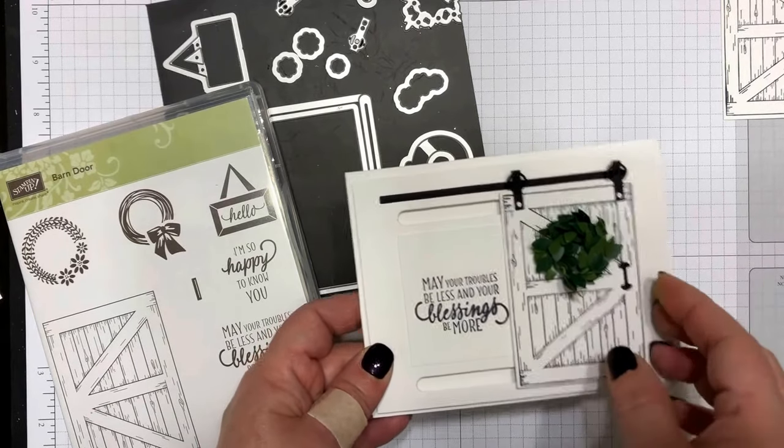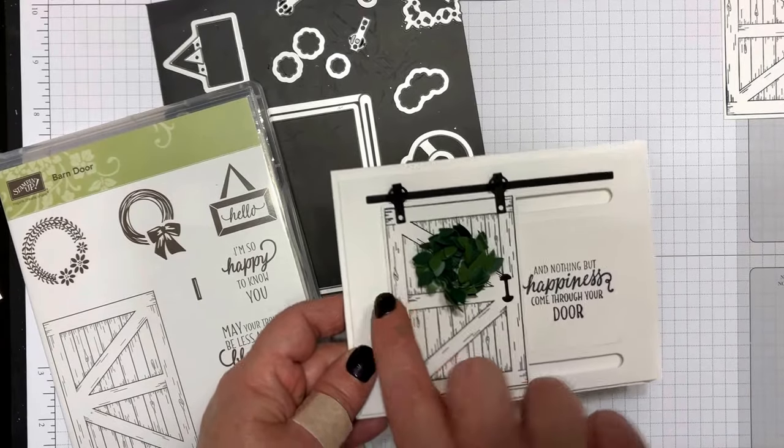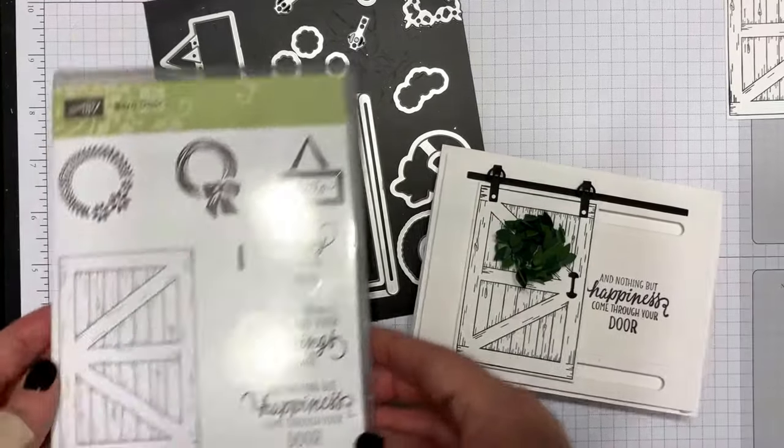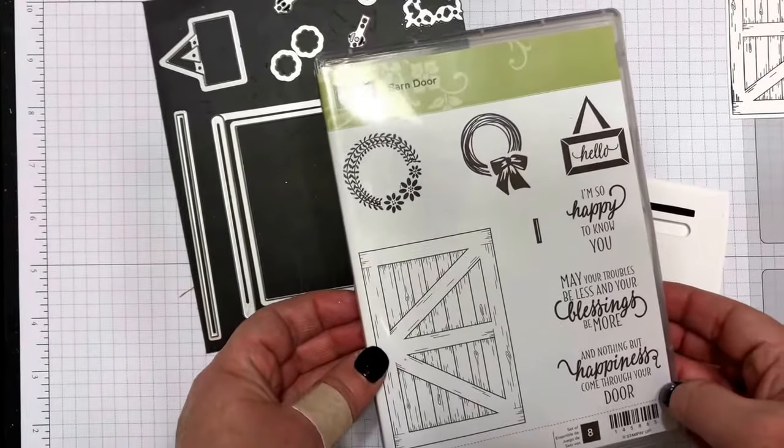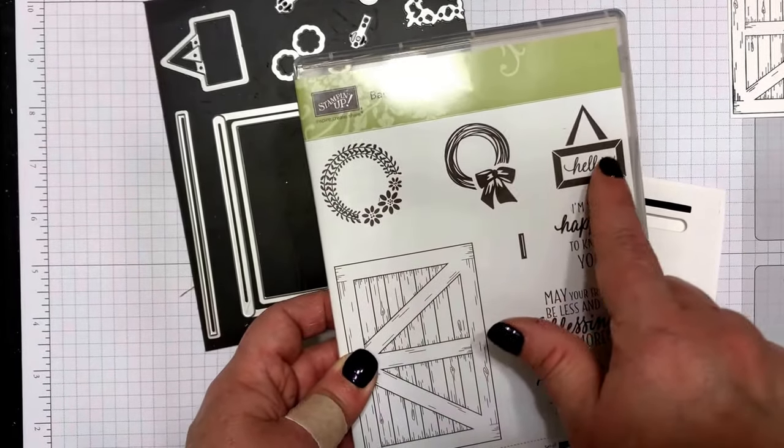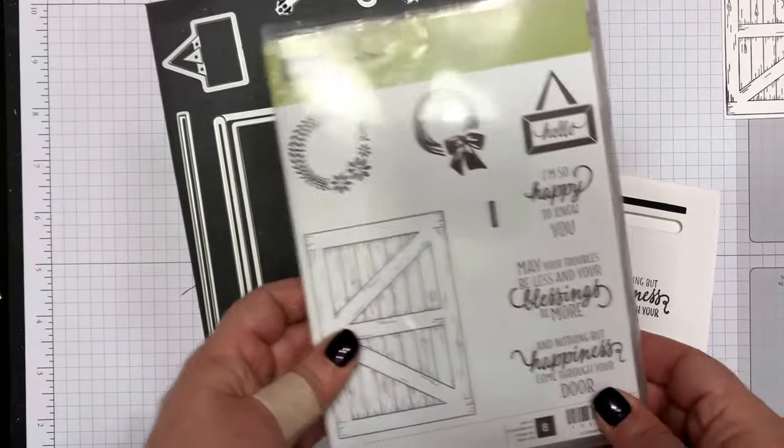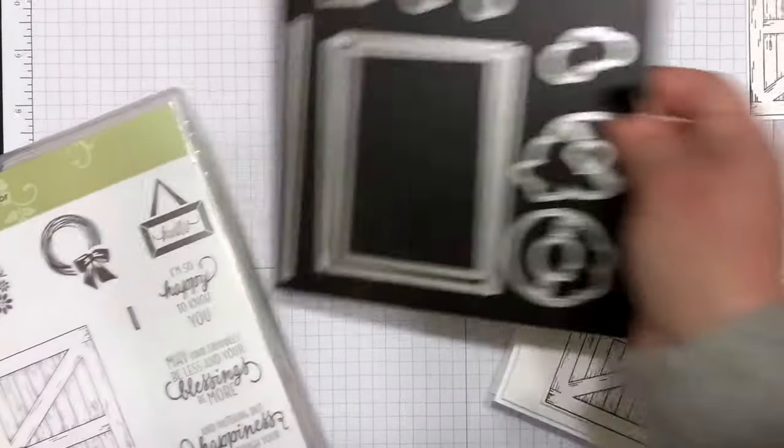This is the barn door stamp set. It's a set of eight stamps. It comes with the barn door and also some wreath and hanger images as well as your greetings that you can use on the inside.